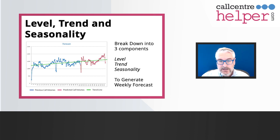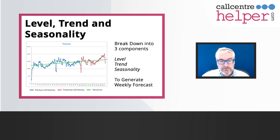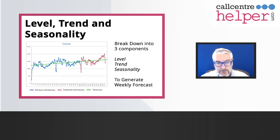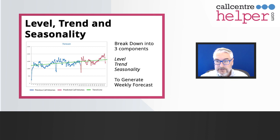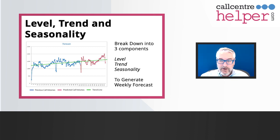Those three components are: level — which is the level that you're currently at; trend — which is the difference between one period and the next. If you take the level and trend together, you can form a trend line, which is the overall approach. And also look at seasonality — that is, how much things vary over the season.